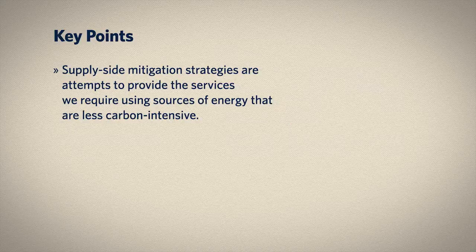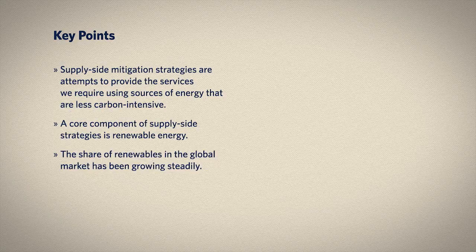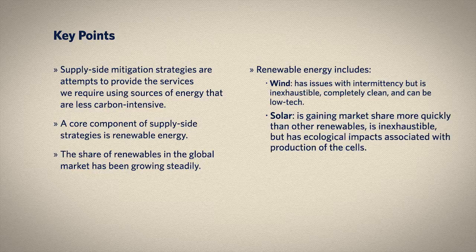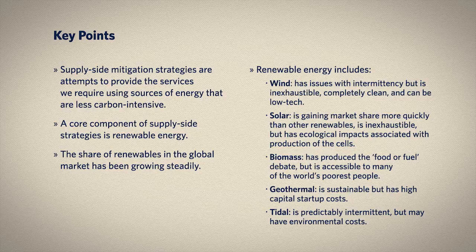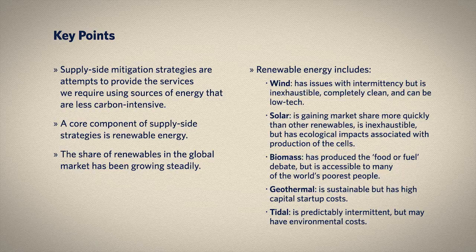During this lecture, we've explored the flip side of the mitigation coin, supply side strategies. These strategies have the potential to transform our global energy system and may even reduce the need for dramatic conservation or efficiency measures. We learned the difference between renewable and non-renewable energy and explored five examples of modern renewable energy. We didn't delve into the most common form of renewable energy, large-scale hydro, mostly because of its significant environmental and social impacts. A core concept that ran through our discussions was that of intermittency, which is a key difference between many renewable sources of energy and the fossil fuel combustion that dominates today's energy system. As we wrap up our exploration of mitigation strategies, we'll briefly explore the last element of mitigation — carbon capture and storage.